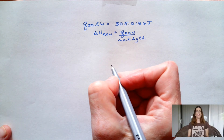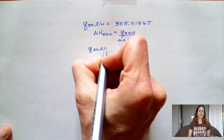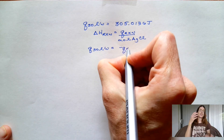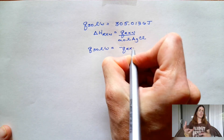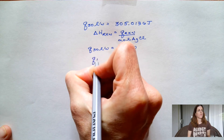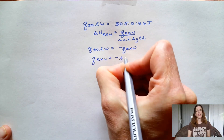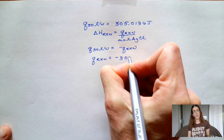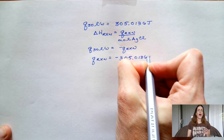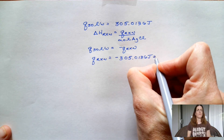Here I'm reminding myself that I can solve for the enthalpy of the reaction by taking my Q of the reaction and dividing by the moles of silver chloride. The Q of the solution is equal but opposite to the Q of the reaction, so I throw a negative sign on the solution value.